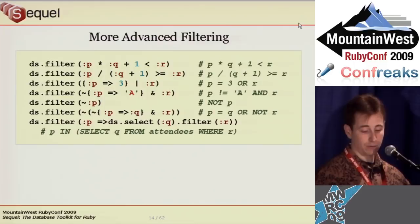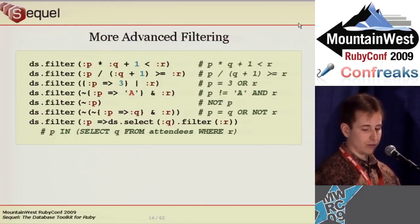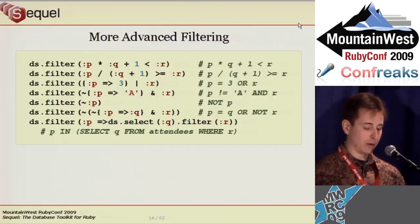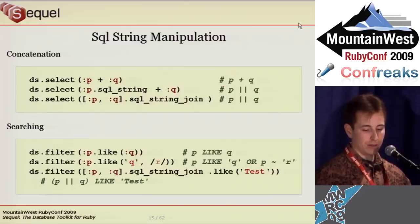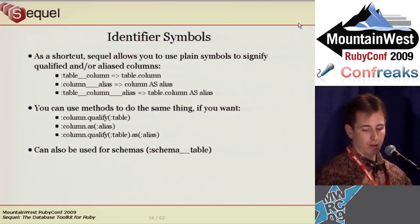Putting your objects directly in your queries feels natural — more so than using strings with placeholders. The expression syntax is terse but hopefully intuitive. Be aware that using the bitwise operators in place of the logical ones often requires extra parentheses. If you do string manipulation in the database, Sequel can help — it supports concatenating strings, doing like searches, and full-text searching on some databases.